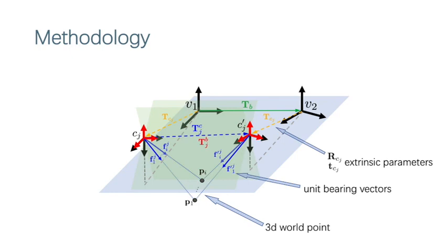pointing at the same 3D world point p_i from the j-th camera at the first and second frame. Let R_cj and T_cj be the extrinsic parameters from the camera to the common body frame B. Let T_B and R_B furthermore denote the relative pose of the body frame between two subsequent viewpoints.